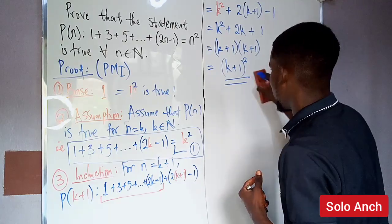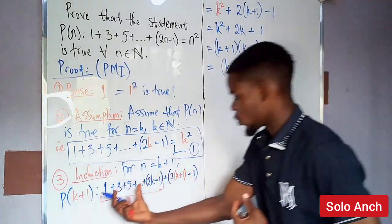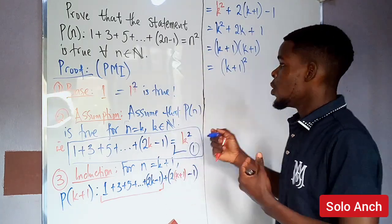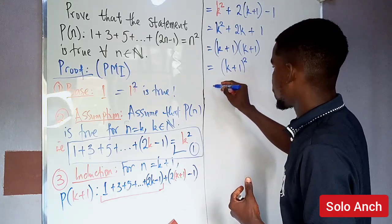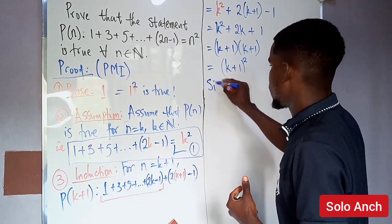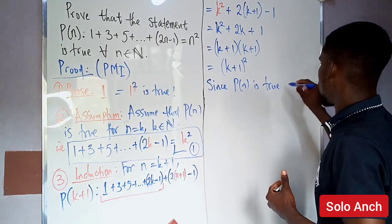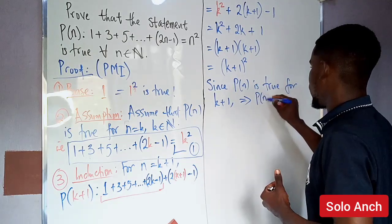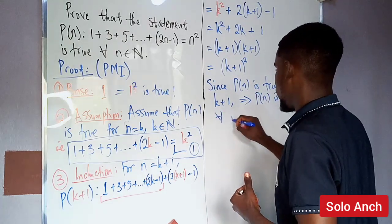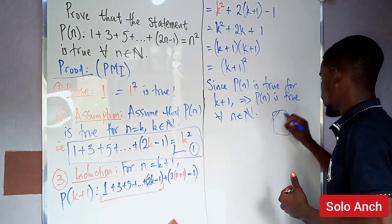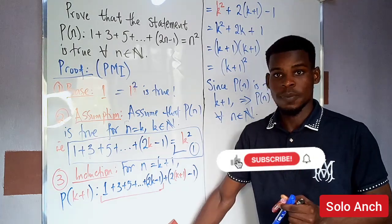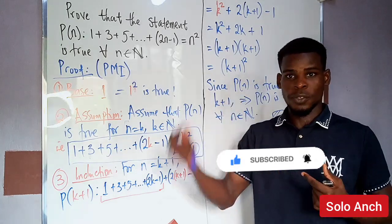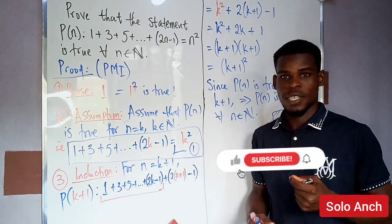We've shown that adding k plus one odd natural numbers gives (k plus one) squared, which agrees with the original statement. Therefore, since P(n) is true for n equal to k plus one, by the principle of mathematical induction P(n) is true for all natural numbers n. Thanks for watching — if you have questions, leave them in the comments below.